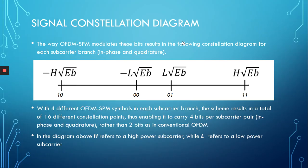As OFDM-SPM modulates its bits in a different manner than conventional OFDM, this results in a different signal constellation diagram. When QPSK is used with OFDM-SPM, it has a rather different signal constellation. For each branch — either the quadrature or in-phase subcarrier — each has four constellation points, giving us 4×4, which equals 16 total constellation points, allowing us to transfer four bits per subcarrier pair.